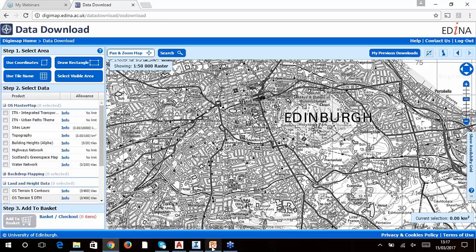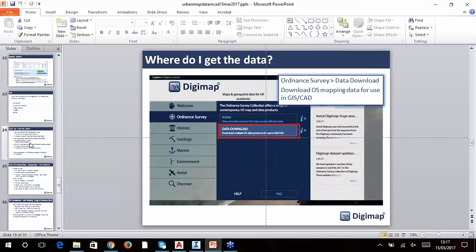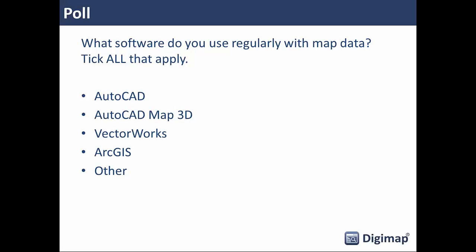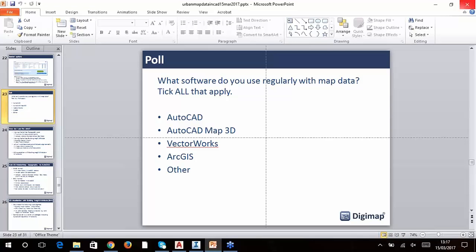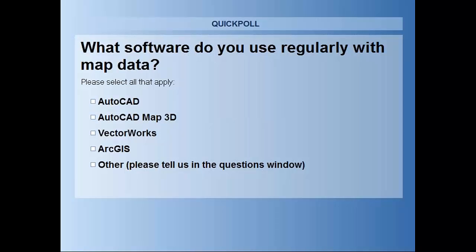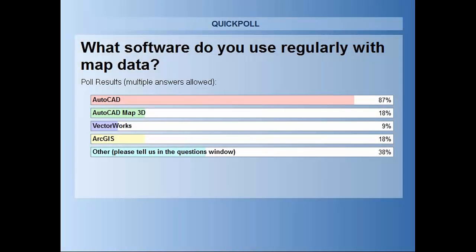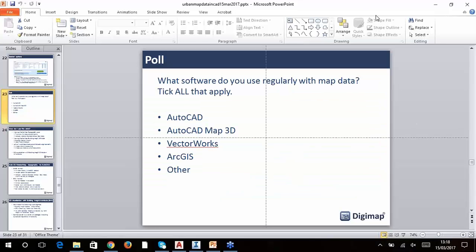Before looking at using the data, let's run a quick poll on which applications you regularly use for map data — you can multi-select. About 87% of people use AutoCAD but around 38% use other things as well that aren't listed. That's really good to know — we'll look at that information and see if we need to develop more help resources.